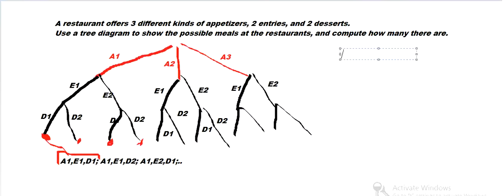And if you notice, here we have 3 appetizers, 2 entrees, and 2 desserts. So we just multiply 3 times 2 times 2, and that's 12 different possible meals.